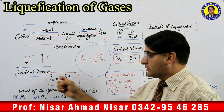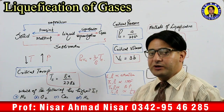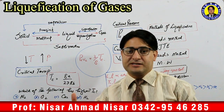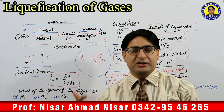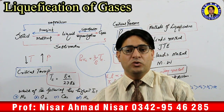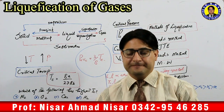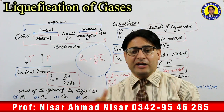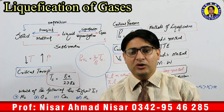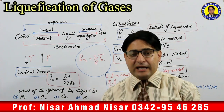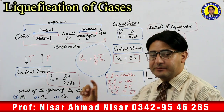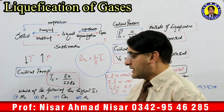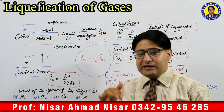Mathematically, Tc equals 8a divided by 27Rb, where 'a' and 'b' are van der Waals constants. I have described their meaning in a previous session. If you have not watched my van der Waals video — there are two parts available — you can go there and study. Many MCQ techniques related to 'a' and 'b' have been discussed there.